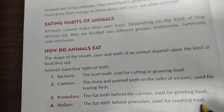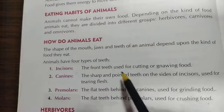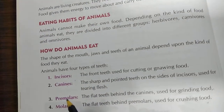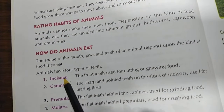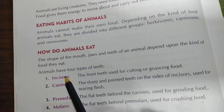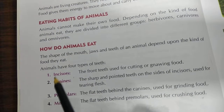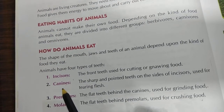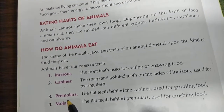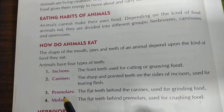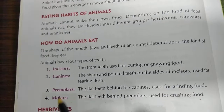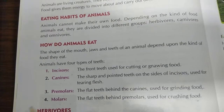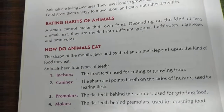So what are the four types of teeth? Incisors, canines, premolars and molars. Incisors are used for cutting the food. Canines are used to tear the flesh. Premolars are used for grinding the food. Molars are used to crush the food.